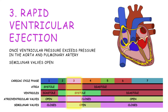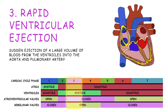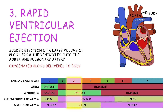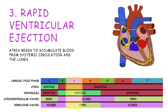The semilunar valves open, and there is a sudden ejection of a large volume of blood from the ventricles into the aorta and pulmonary artery. This results in the delivery of oxygenated blood to the body and deoxygenated blood to the lungs. The atria begin to accumulate blood from systemic circulation and the lungs.